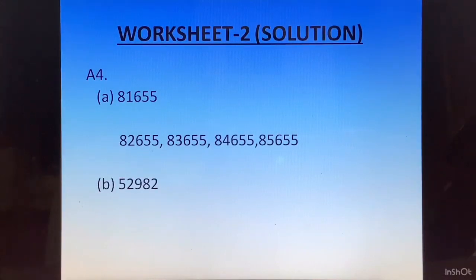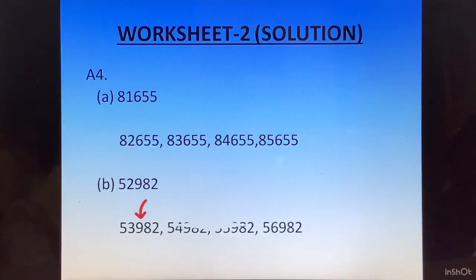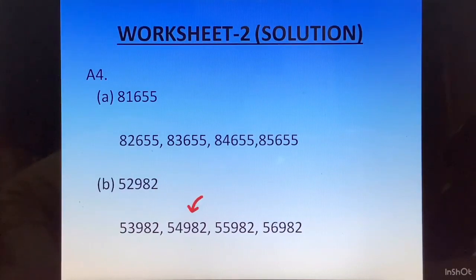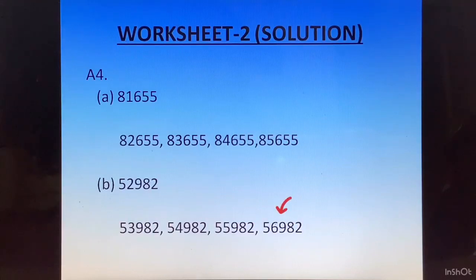For Part B starting from 52982, we add 1000 each time to get 53982, then 54982, then 55982, and finally 56982.